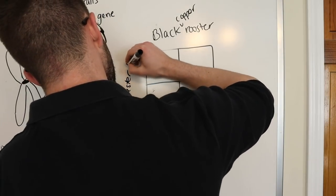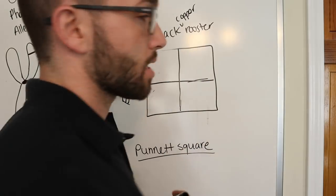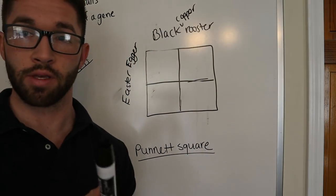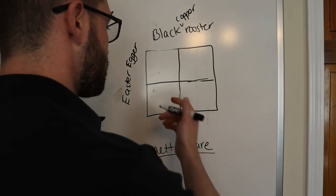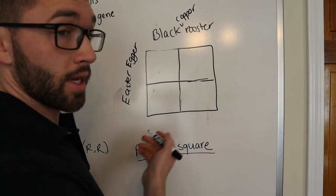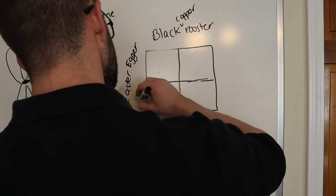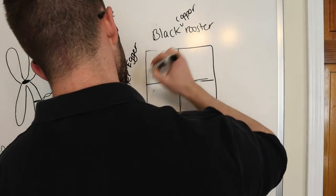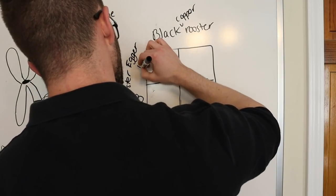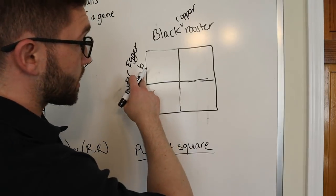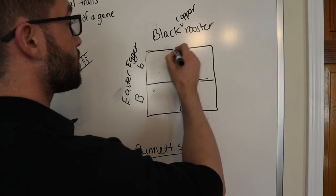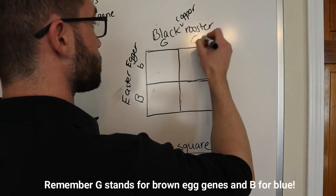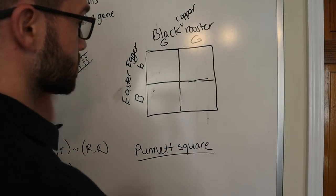So, for the sake of this Punnett square, we're going to say that the hen carries one copy. Because she does lay blue eggs, but they're not very blue. But we're unsure if she carries both like an Americana would. So, we're going to do B again. So, I'll do one uppercase and one lowercase. The lowercase being recessive, which means that she only contains one blue egg gene.